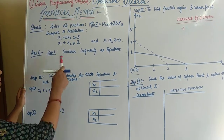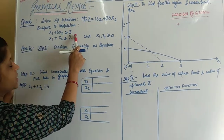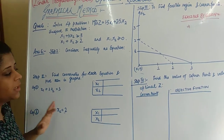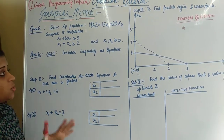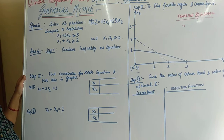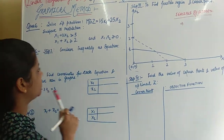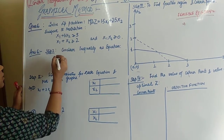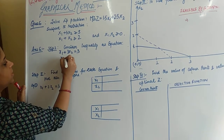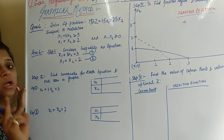Now starting with question number 6, this is the LP problem with minimization objective function, 2 constraints and 2 decision variables. For that, there are 4 steps in which we can solve this given problem by the graphical method. The first step of graphical method is to convert the given inequality as the equation. Writing them as equations, we get x1 plus 3x2 equals 3, and 3x1 plus x2 equals 2. This is equation 1 and equation 2.